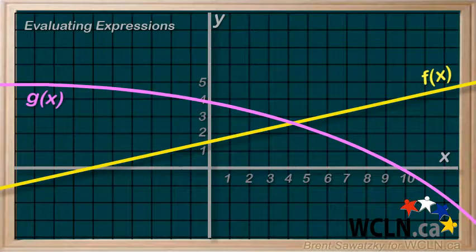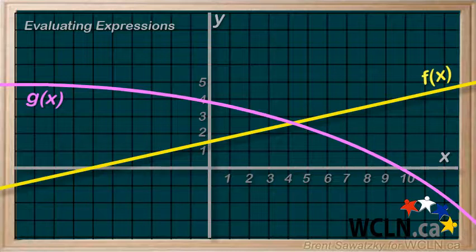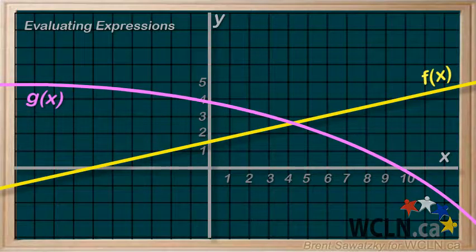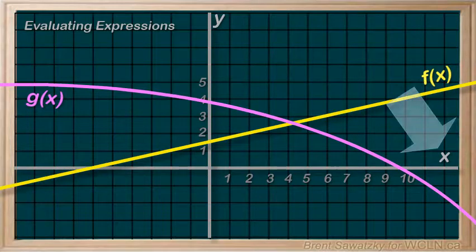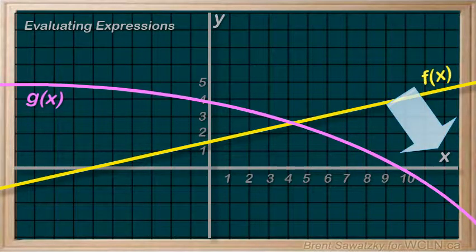As we know, equations are often graphed. Thus, let's make sure we can adapt our new knowledge about function notation to graphing. As before, we have our grid and our axes. Our horizontal axis is still commonly called the x-axis, so that's the same.